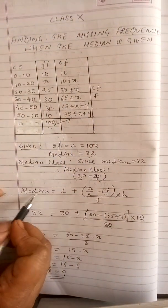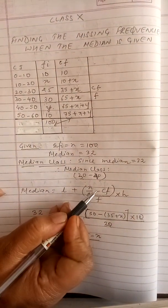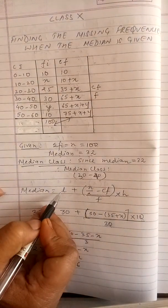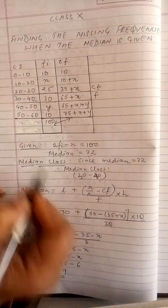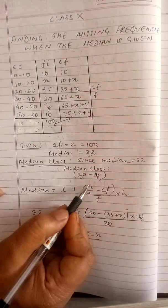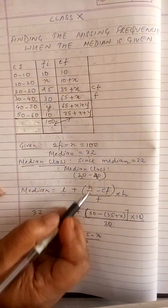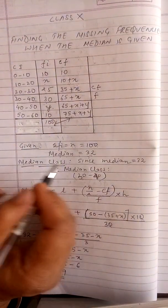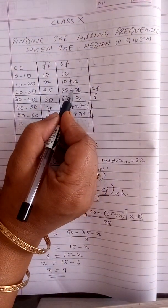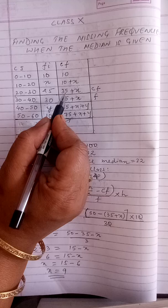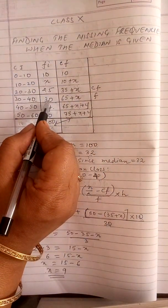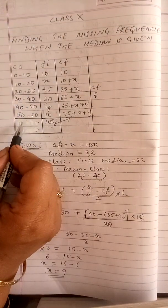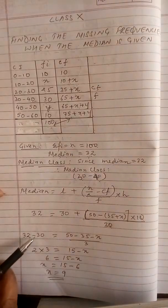The formula: median equal to L plus N upon 2 minus CF into H upon F. L is the lower limit of the median class, which is 30. N by 2, N is 100, so N by 2 is 50. CF is always of the previous class, so CF is 35 plus x. Frequency is always of the median class, so that is 30. H is the class size, which is 10.